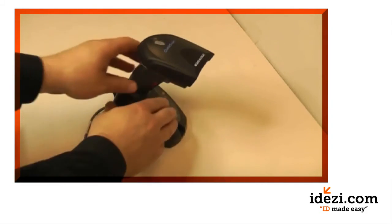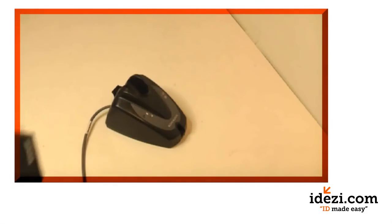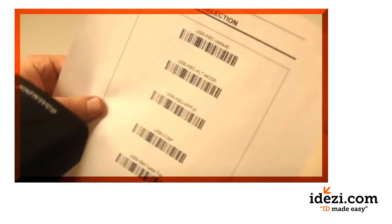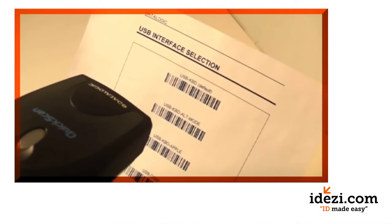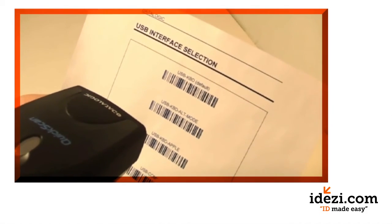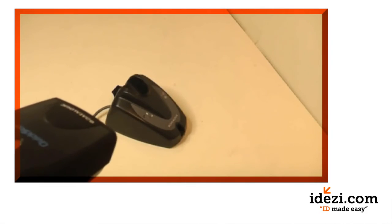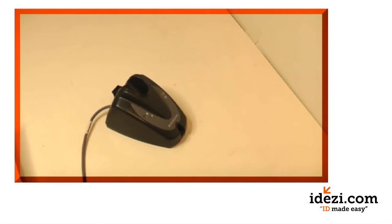Once the scanner has been bound to the cradle, go to page 10 for the list of interface types. Most setups require the USB KBD barcode to be scanned. This puts the scanner in a mode that sends barcode data as keyboard data.